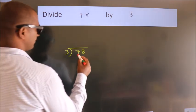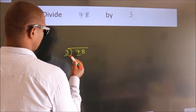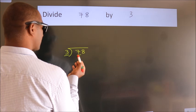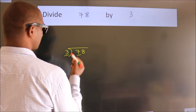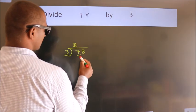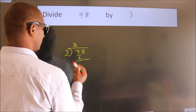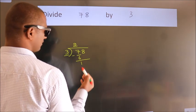Next, here we have 7, here 3. A number close to 7 in the 3 times table is 3 times 2 is 6. Now we should subtract. We get 1.